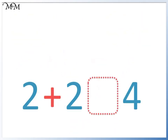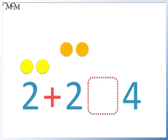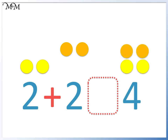In this example, we need to complete our number sentence. We have two and two. The addition means that we will combine them into a total. There are one, two, three, four counters in total. This is the same as the four we have here. To show that two add two is the same value as four, we use an equal sign.